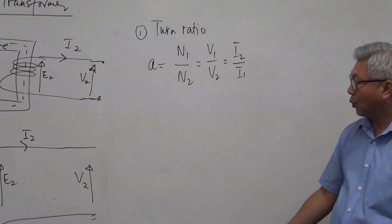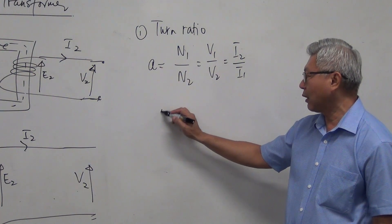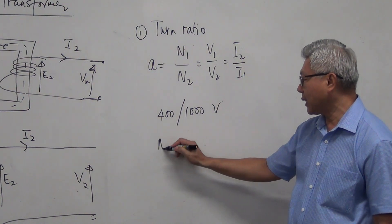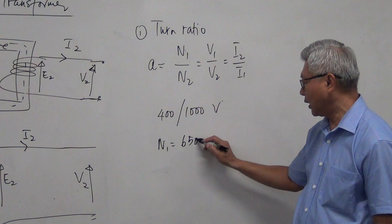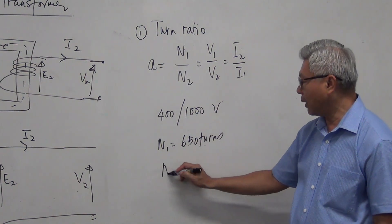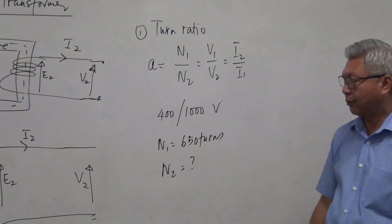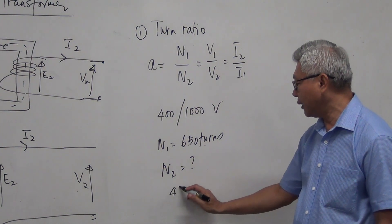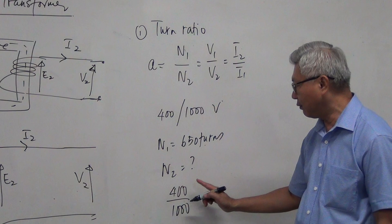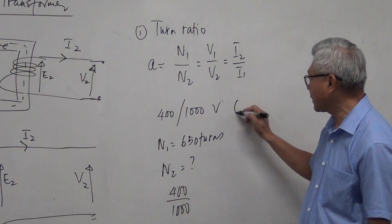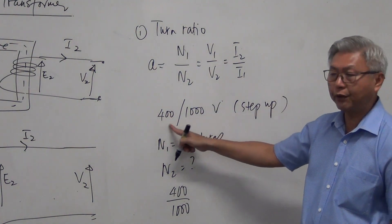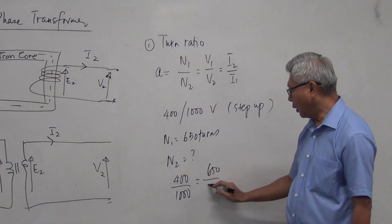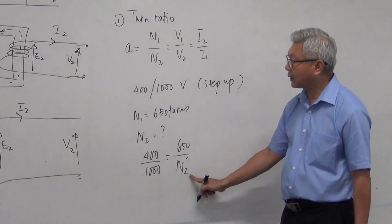How do you use the turn ratio? For example, if this transformer is a 400 to 1,000 volt transformer and the number of turns N1 is equal to 650 turns, and I ask you to find the secondary turns N2, you can use the turn ratio formula. Turn ratio equals 400 divided by 1,000 — that is V1 over V2. If this is a step-up transformer, we are stepping up the voltage from 400 to 1,000 volts. V1 over V2 equals N1 over N2, and so N2 can be solved using the turn ratio.